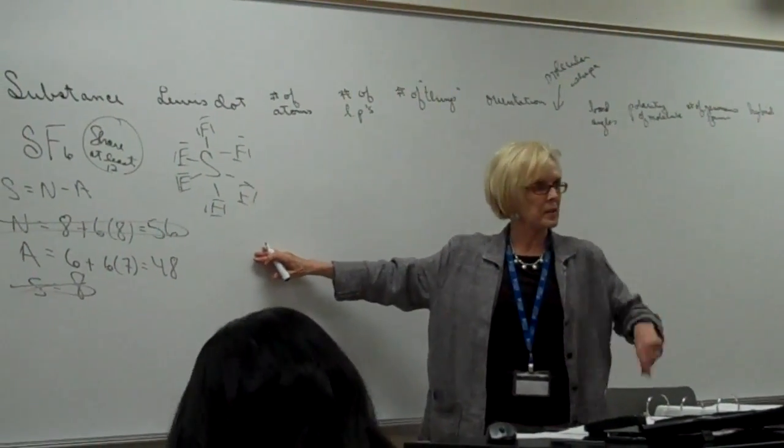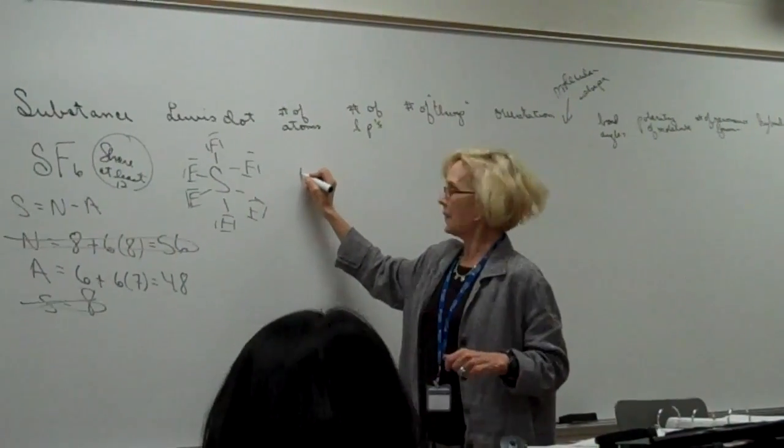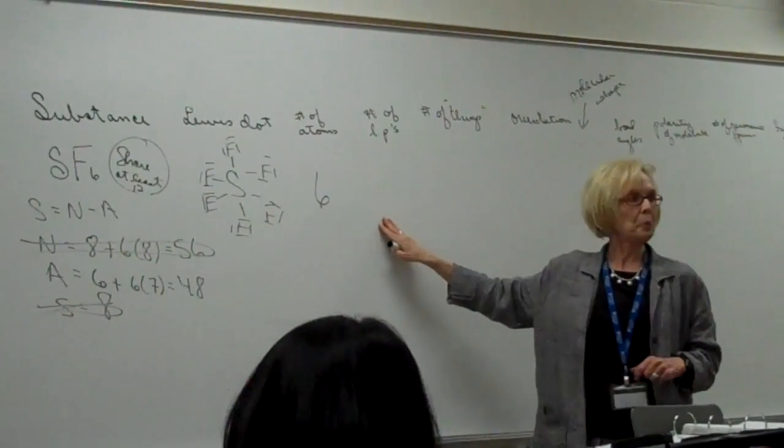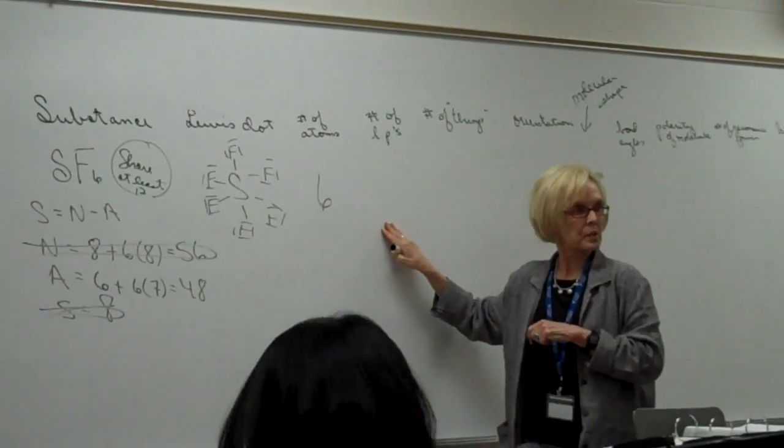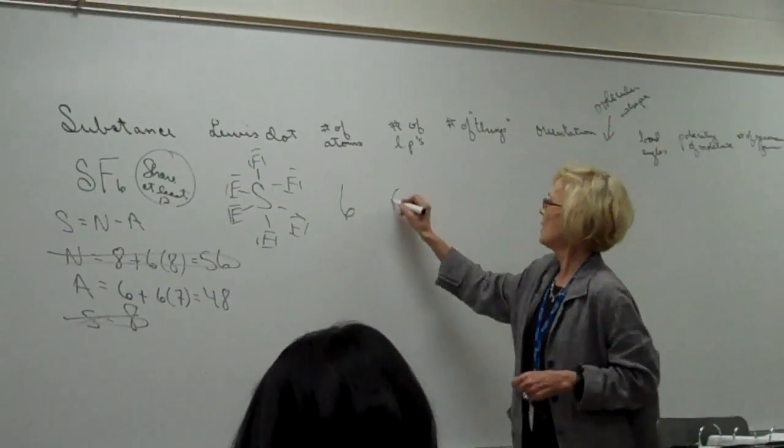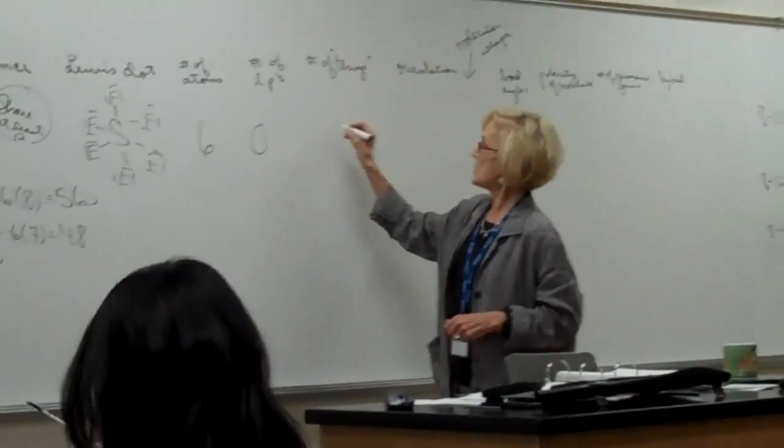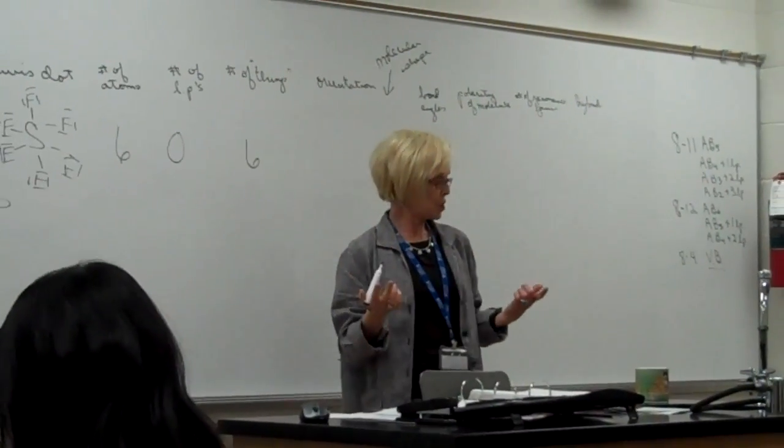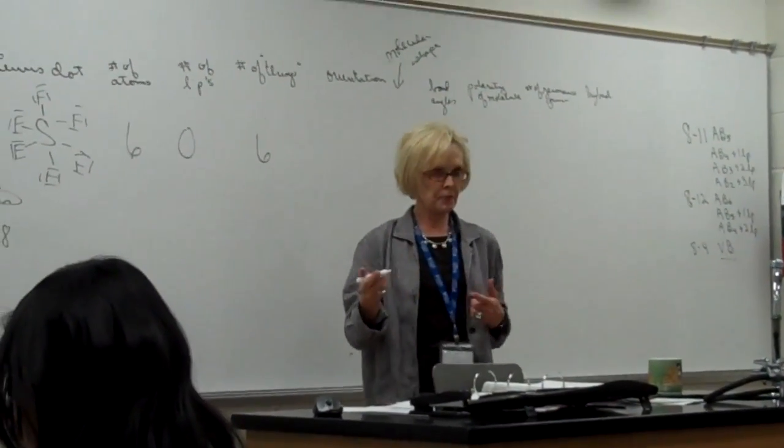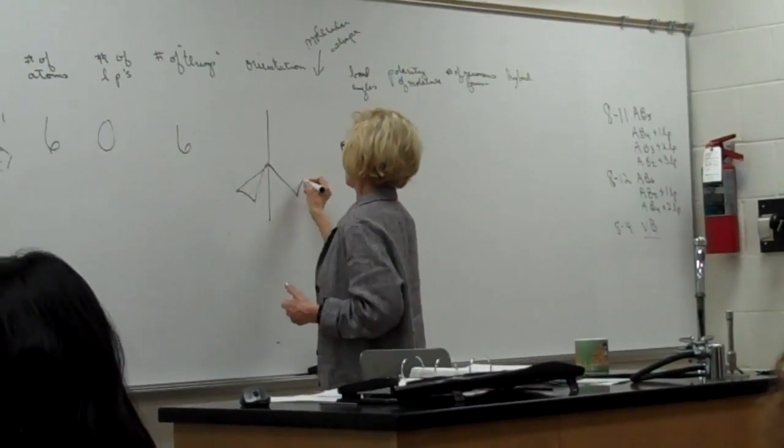Let's head on then. When we look at this, Cassandra, how many atoms? Six. And lone pairs, Charles? How many lone pairs on your central atom? None. None. And so our number of things here, Sarah? Six. We've got a new shape, but you've seen it in your lab 15, that it's going to be an octahedron.